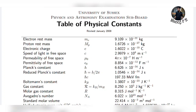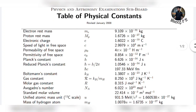First of all, you will have to consider the constant values. For electron charge, this is very important: 1.6022 × 10 to the power of minus 19 coulombs. This is very important to learn.